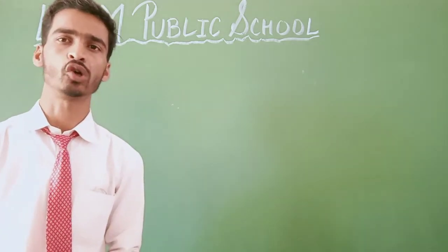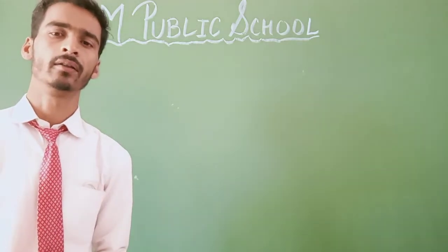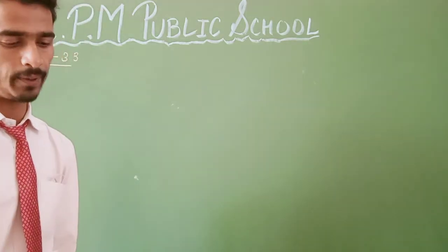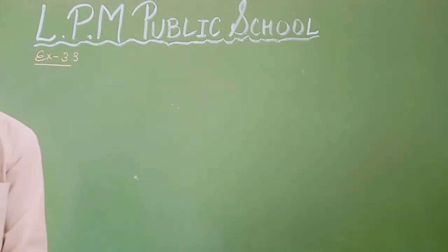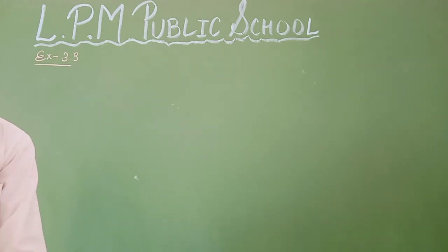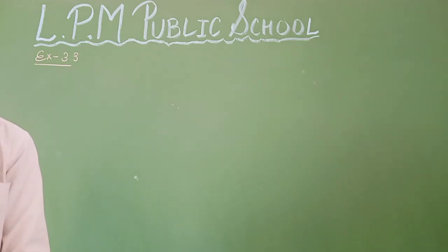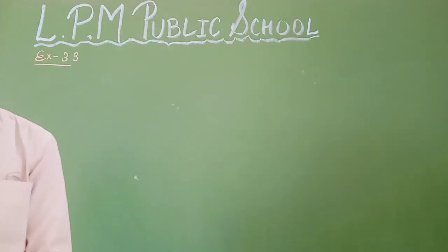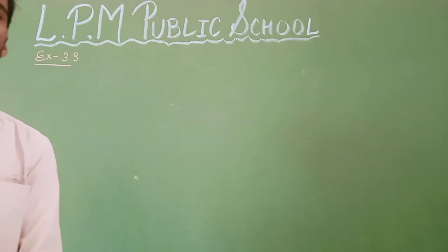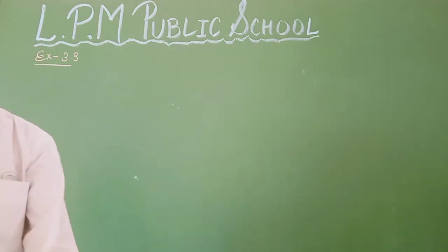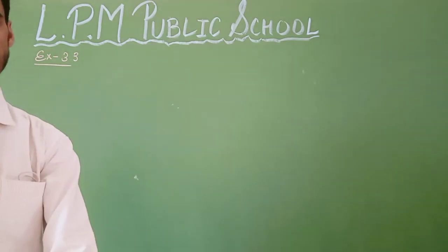Today we have to solve Exercise 3.3 that is given in your book on page number 48. On the last day you learned multiplication by a 2-digit number and multiplying by expanding the bigger numbers. You also learned multiplication by a 1-digit number and properties of multiplication. But today we have to learn multiplication by a 2-digit number.